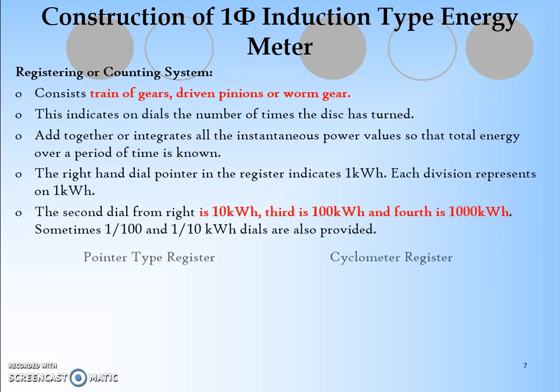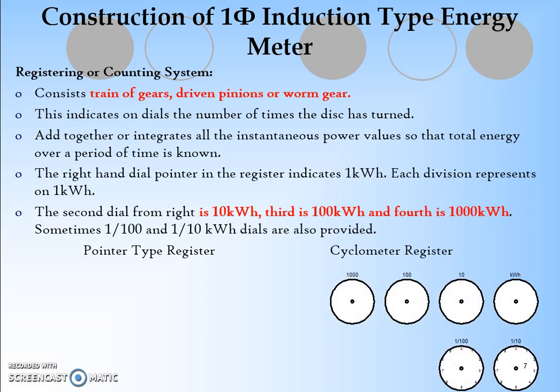The registering mechanism provides how many units have been consumed in a particular year or month. Different dials are provided. The second dial from the right is for 10 kWh, the third is 100 kWh, and the fourth is 1000 kWh consumption. Sometimes 1/100 and 1/10 kWh are also provided for accurate results. The dial train is driven by pinions or worm gear.